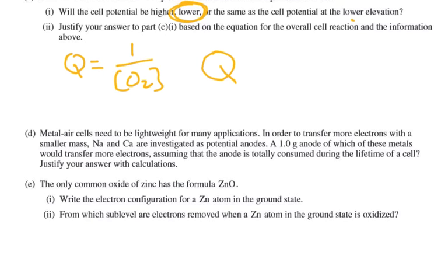Going on to part D, metal air cells need to be lightweight for many applications. In order to transfer more electrons with a smaller mass, sodium and calcium are investigated as possible potential anodes. So a one gram sample of which of these metals would transfer more electrons. So now we're just going to do a calculation. So justify with calculations. And so we have to say, if I had one gram of sodium, then we need to change it to moles. And if I had one gram of calcium, we need to change it to moles. And let me see if I can fit that in. I'm going to try to fit it in up here above.